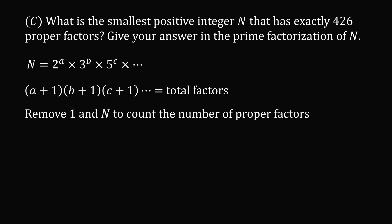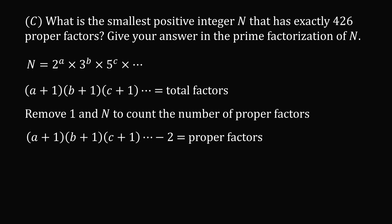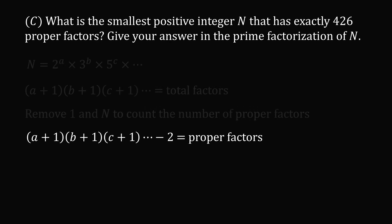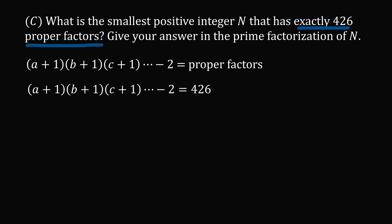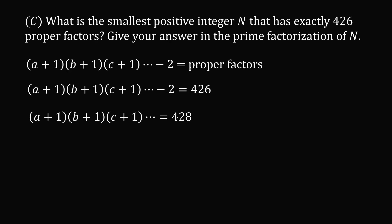To get the number of proper factors, we remove 1 and n, so we subtract 2 from that product. We want the number of proper factors to equal 426, so the product (a+1)(b+1)(c+1)⋯ minus 2 equals 426. Adding 2 to both sides gives us (a+1)(b+1)(c+1)⋯ = 428.